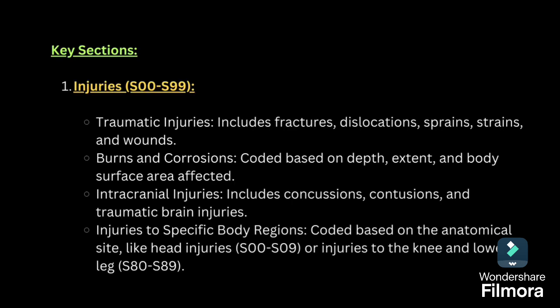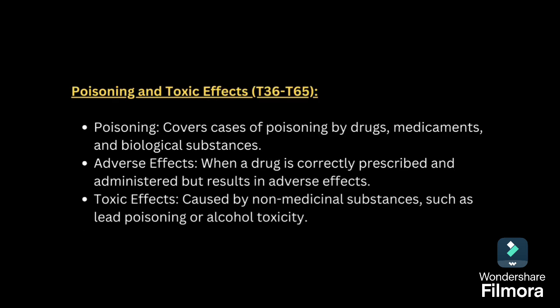Next is how to code injuries. For injuries, the code series is S00-S99, which includes traumatic injuries such as fractures, dislocation, sprains, strains and wounds. Burns and corrosion are coded based on the depth, extent and body surface area affected. Intracranial injuries include concussion, contusion and traumatic brain injury codes.